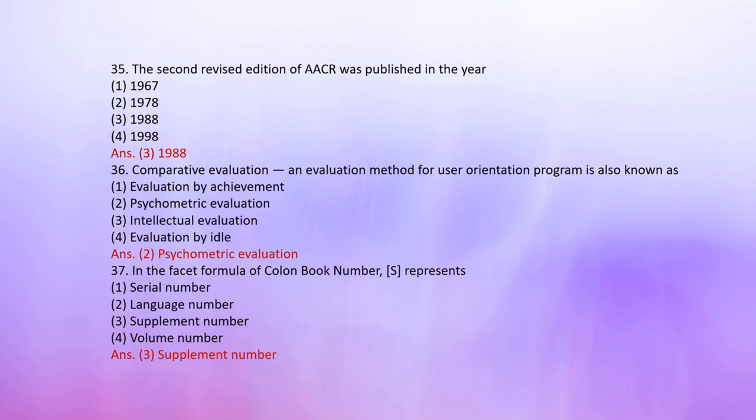Number 35: The second revised edition of AACR was published in the year: 1. 1967, 2. 1978, 3. 1988, 4. 1999. The correct answer is 3: 1988.